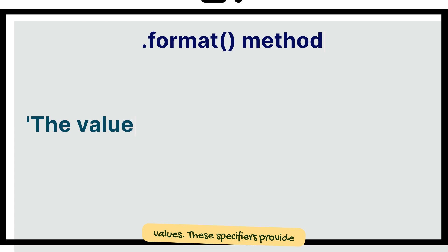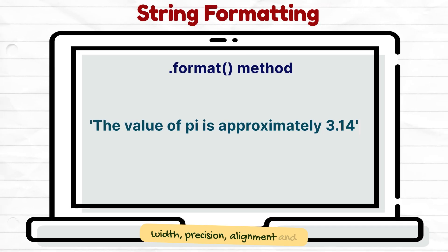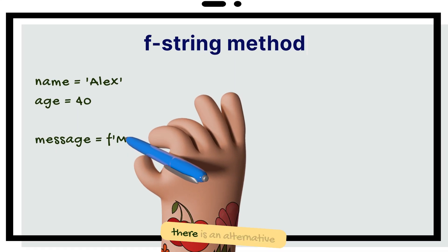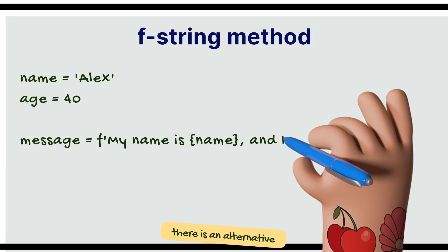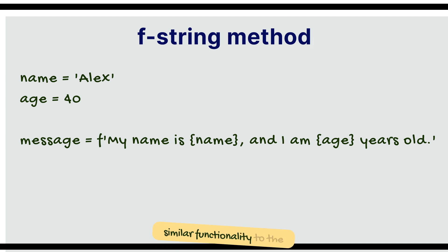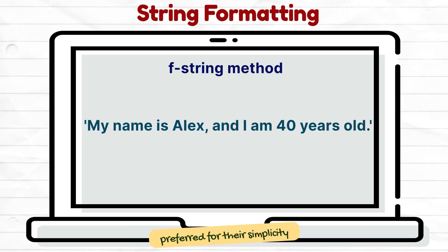Format specifiers can be included within the curly braces to control the formatting of the inserted values. These specifiers provide options for controlling the width, precision, alignment, and type of the output. With the introduction of F-strings in Python 3.6, there is an alternative, more concise syntax for string formatting that offers similar functionality to the format method. F-strings are generally preferred for their simplicity and readability.